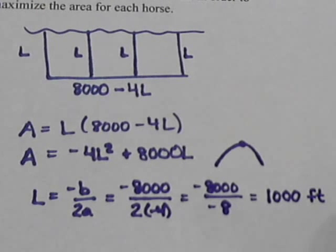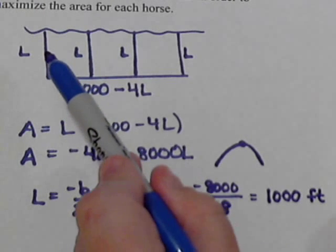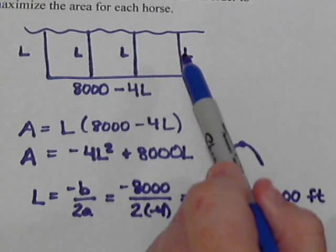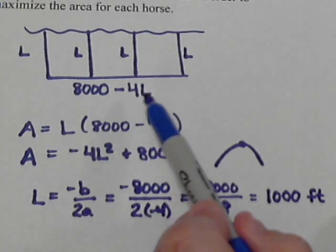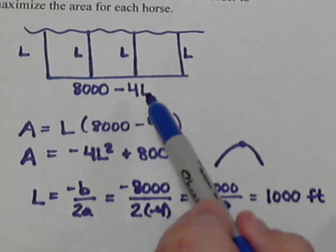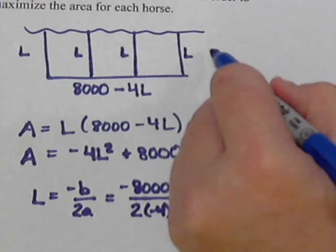So to maximize our fenced-in area, each of these sections needs to be 1,000 feet long which will leave us 8,000 minus 4 times 1,000, so 4,000. 4,000 feet wide.